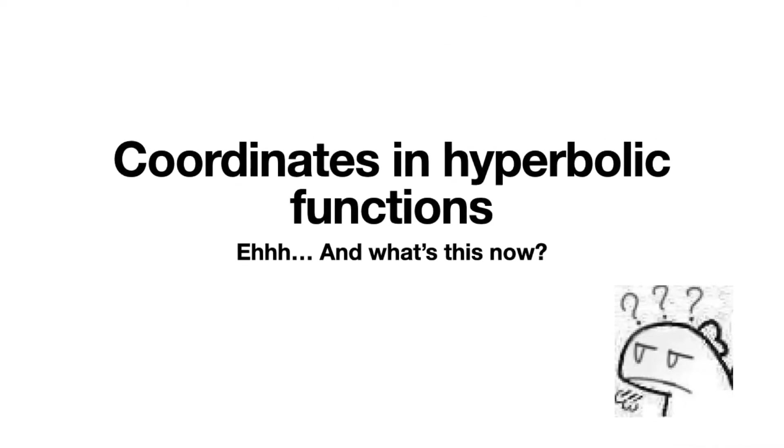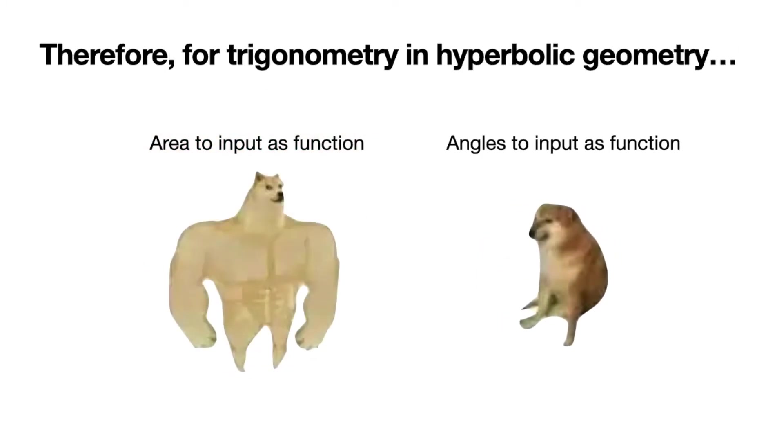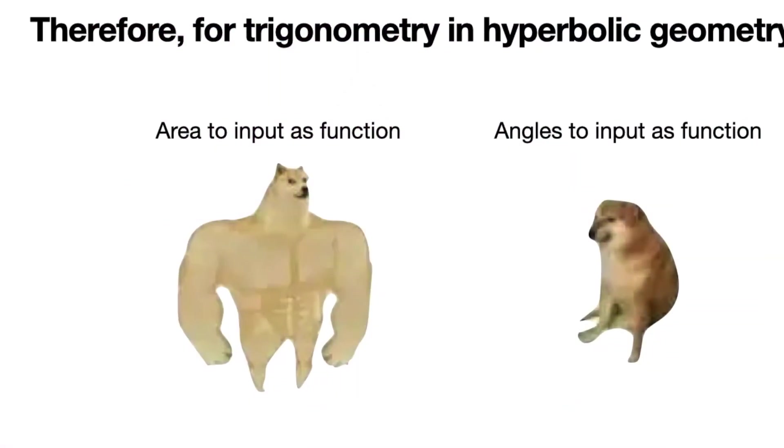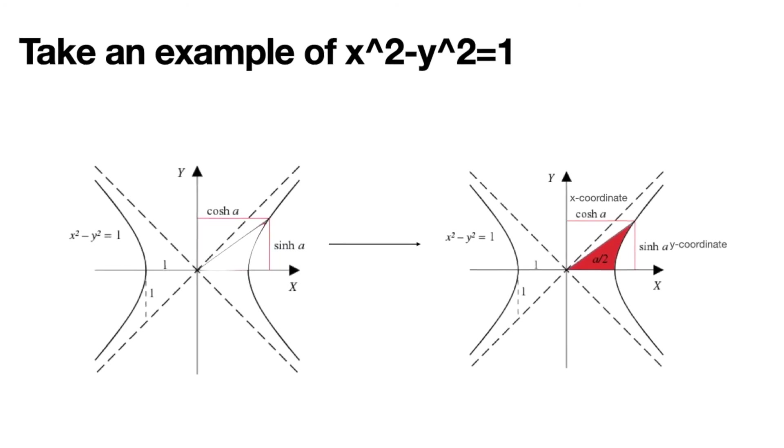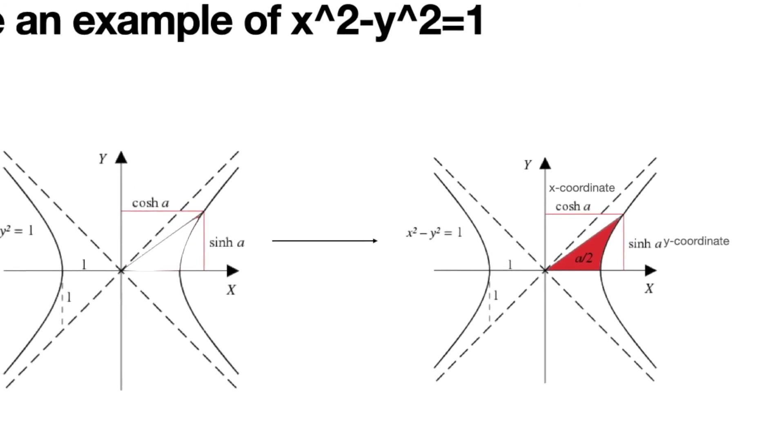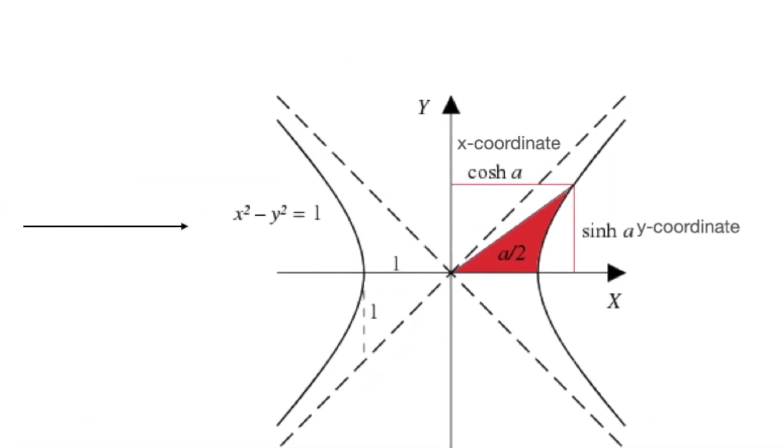Now moving on to the coordinates in hyperbolic functions. Hyperbolic geometry does not use angles as the input to the functions. However, it uses area. Pick a point on the unit hyperbola, or hyperbola with formula x squared minus y squared equals one. Draw a line from the origin to the point along the curve. Now shade the area that is bound by the line, the hyperbola, and the x-axis. The hyperbolic sine of double the shaded area is the x-coordinate of the point, while the hyperbolic cosine of double the area is the y-coordinate.